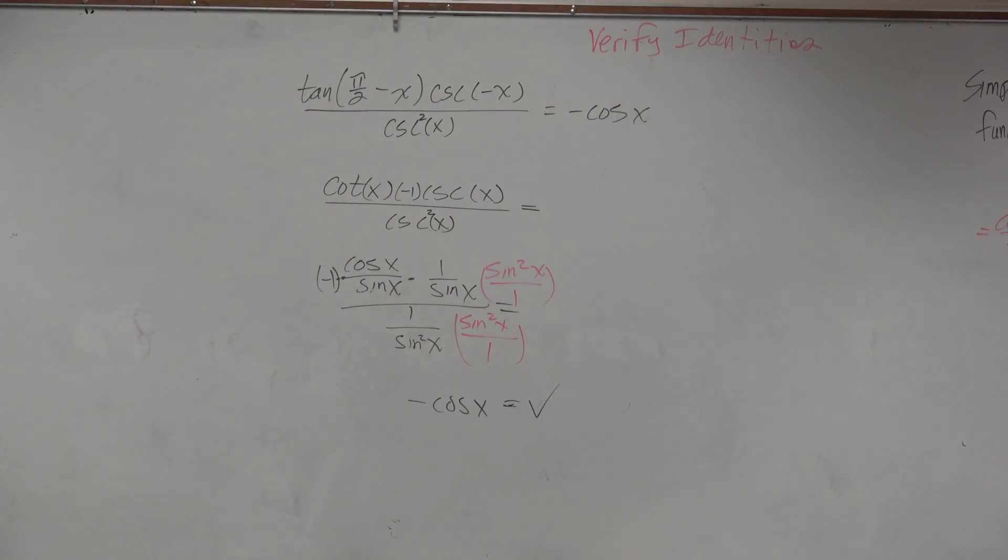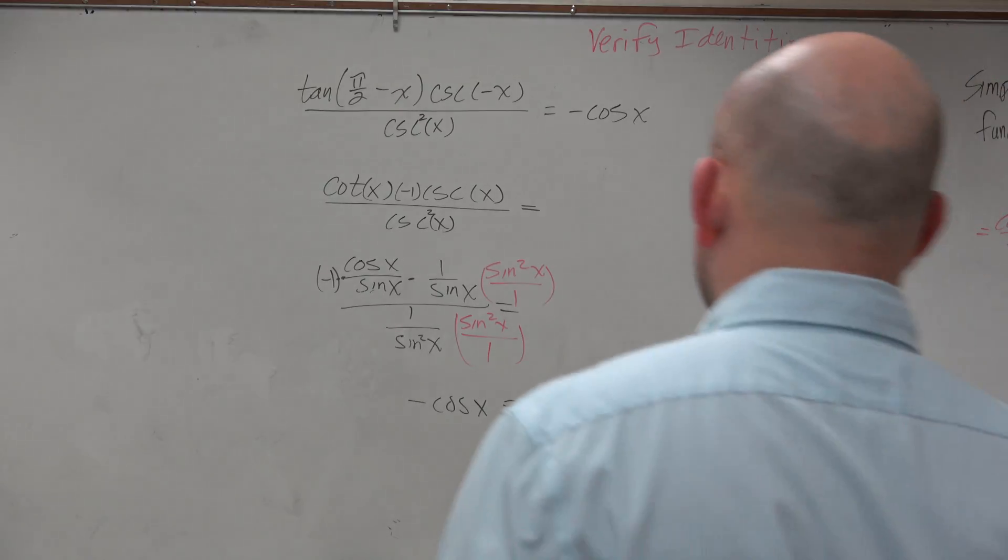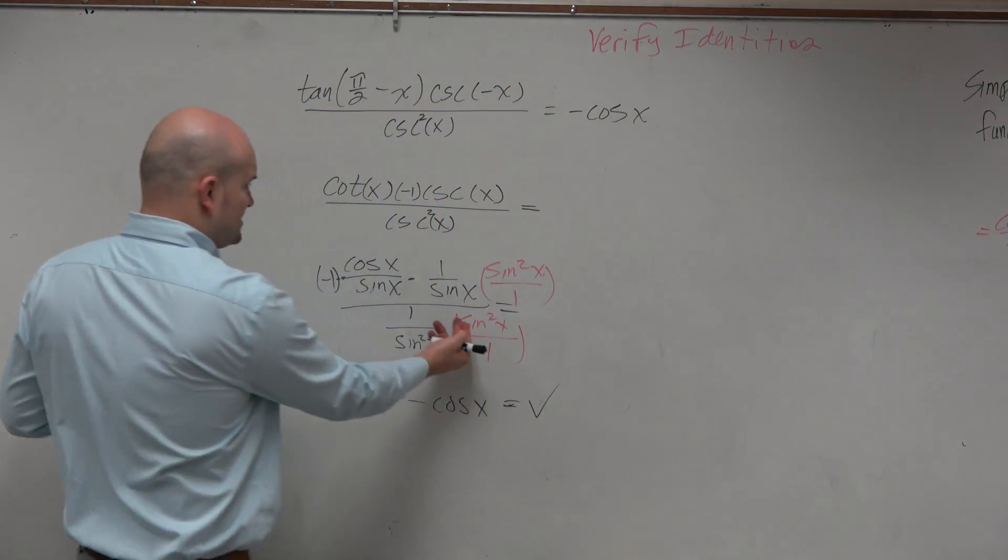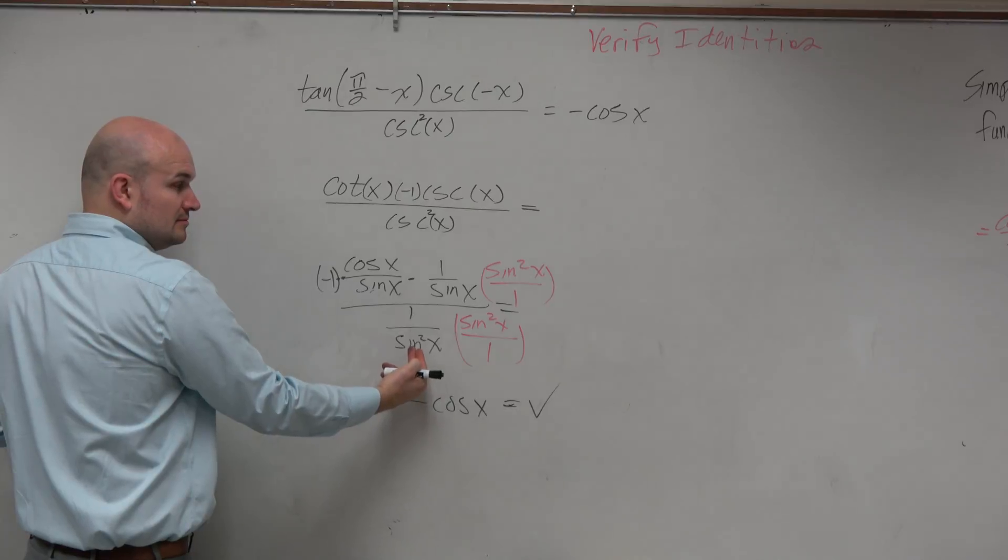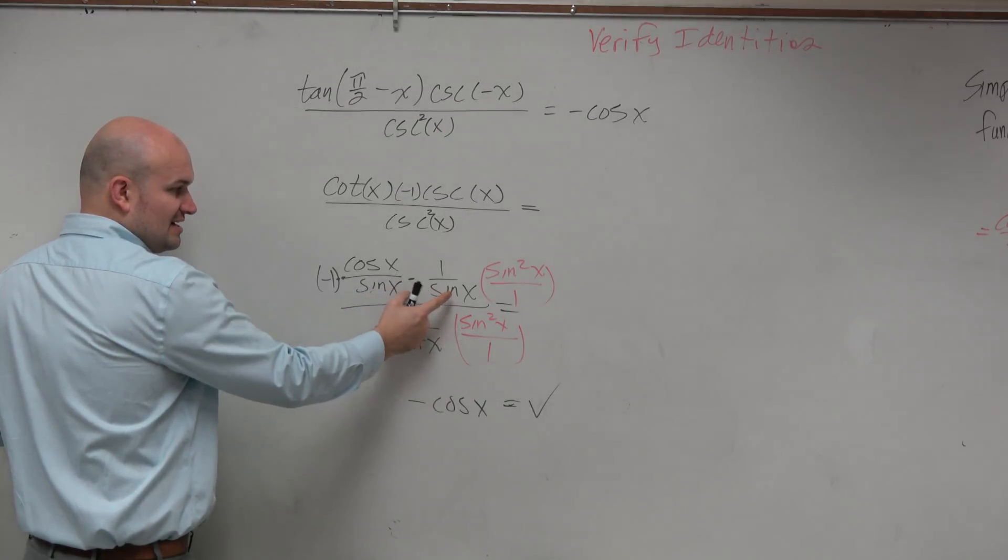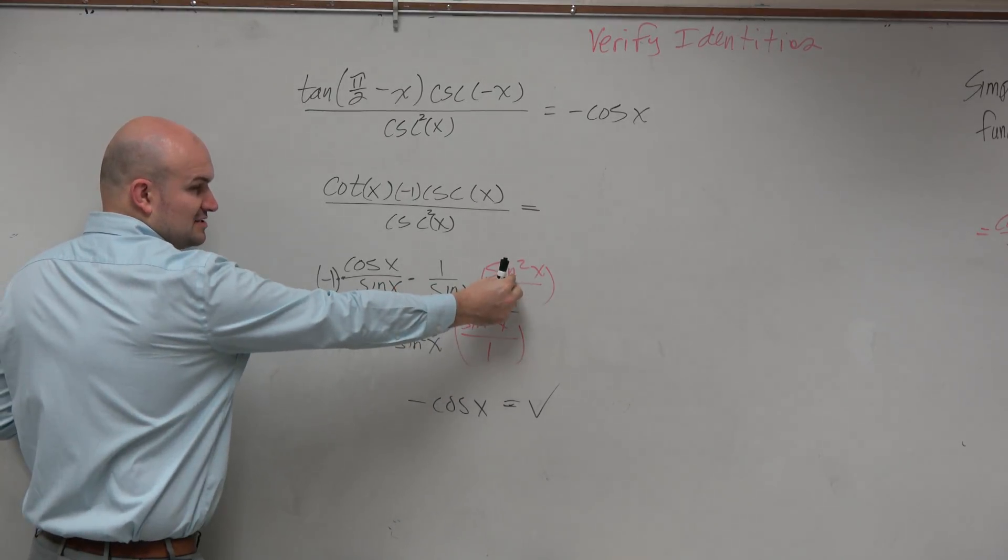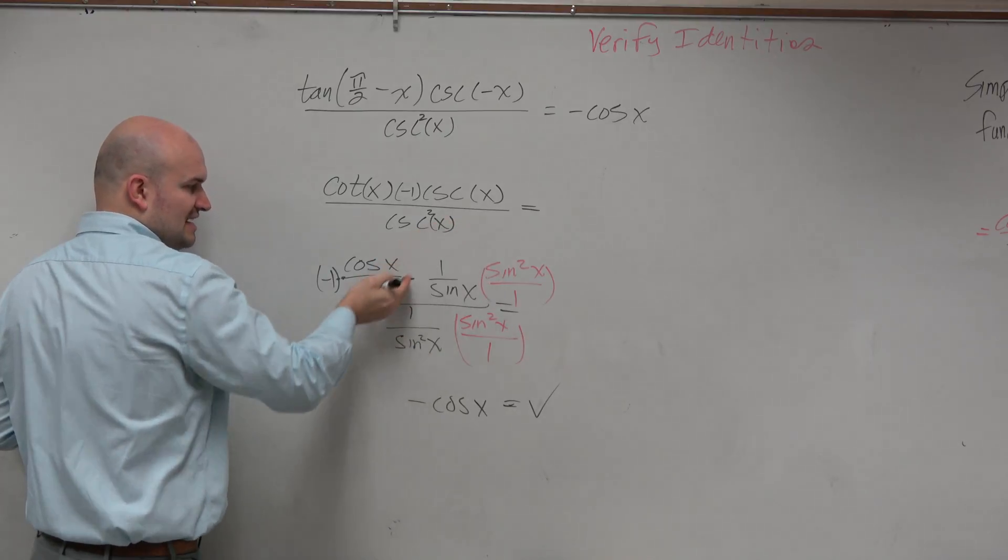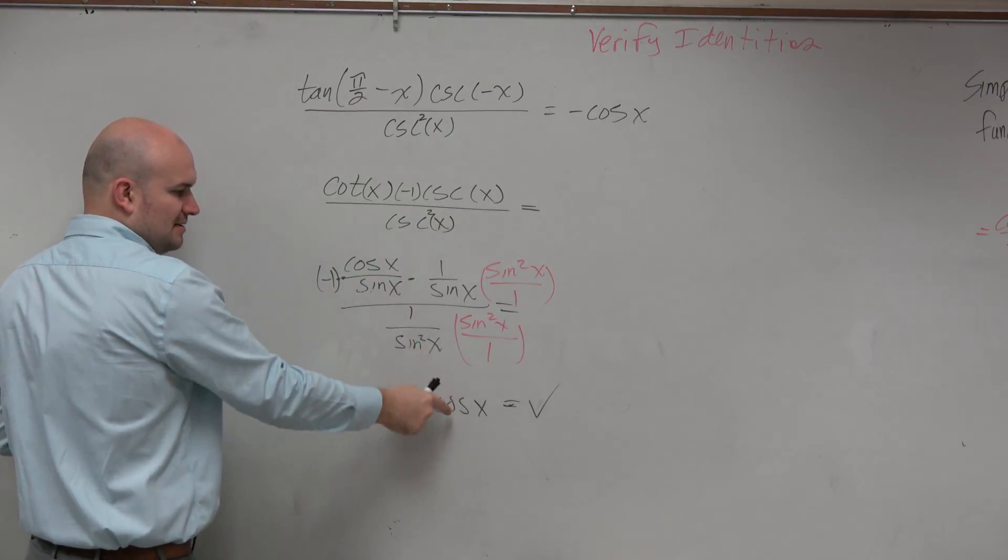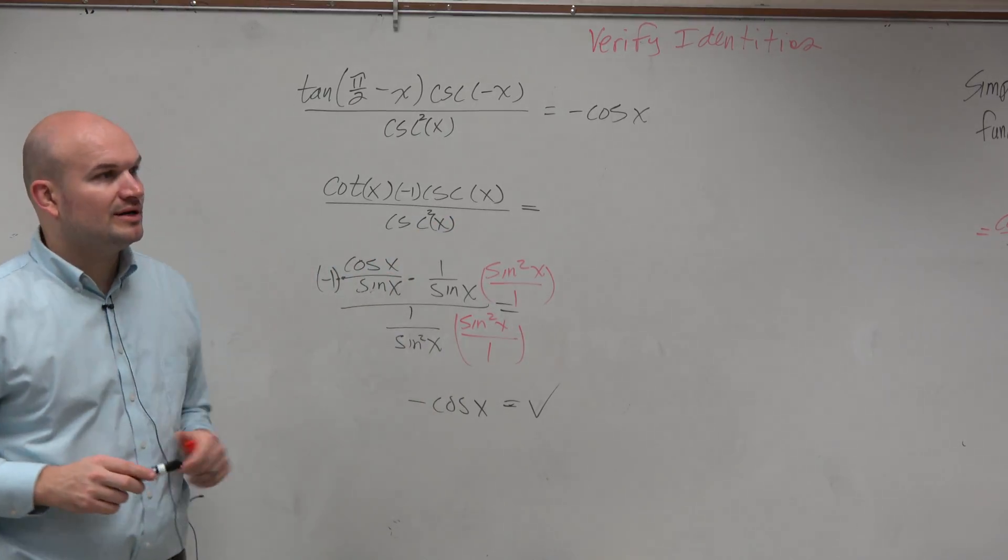That was pretty cool. How did I get that? You understand how the denominator goes to 1? Yeah. Sine of x times sine of x is sine squared of x. Sine squared of x in the numerator, denominator, divides to 1. I have negative 1 times cosine. And that's exactly what equals to the right side.